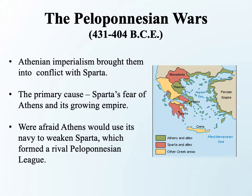A number of city-states were unhappy with this arrangement, but one city-state not part of the Delian League felt particularly threatened: Sparta. The Spartans were beginning to feel threatened by Athens, which seemed to be pulling together a number of city-states to create a formidable military force, and eventually this brought the two into conflict — initiating what's known as the Peloponnesian War. It's a reference to the Peloponnesus, a large landmass connected to the rest of Greece by a small isthmus, where Sparta is located.